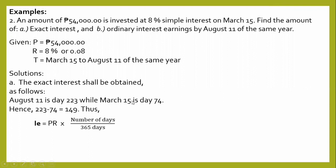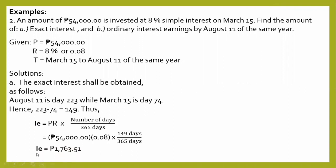Thus, the exact interest IE is equal to P times R times the given number of days over 365. Substituting: 54,000 times 0.08 times 149 days, divided by 365. The exact interest is equal to 1,763 pesos and 51 centavos.